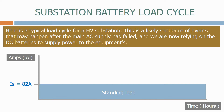This is a fixed amount of current for the full duration of the battery discharge cycle. To calculate the standing load we simply add up all the protection, SCADA, indication and control loads on the system. In this case we have made the standing load 82 amps.